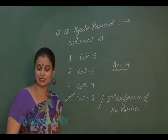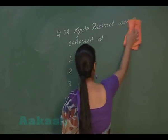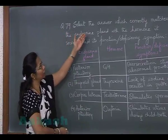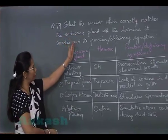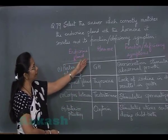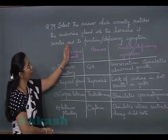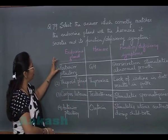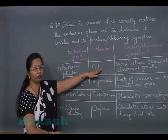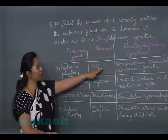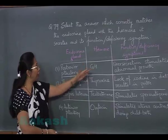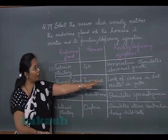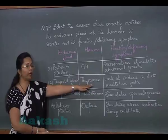In question number 79, we have to match the endocrine gland with the hormone it secretes and its function or deficiency symptom. The first option, posterior pituitary secreting growth hormone, is incorrect because growth hormone is secreted from the anterior pituitary. The second choice — thyroid gland secretes thyroxine, and lack of iodine in the diet results in goiter — is correct.